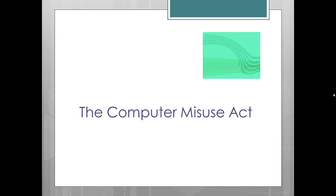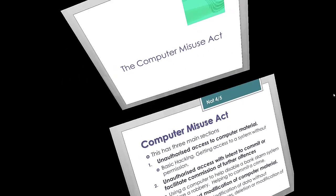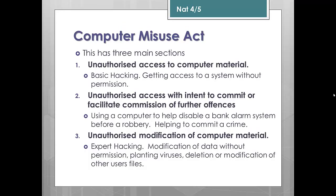Now let's look at the Computer Misuse Act. The Computer Misuse Act has three main sections. One is unauthorised access to computer material — this is basic hacking, getting access to a system without permission. Two is unauthorised access with intent to commit or facilitate commission of further offences, i.e. helping to commit a crime. Three is unauthorised modification of computer material — this is hacking and modifying data, planting viruses, deleting or modifying files.